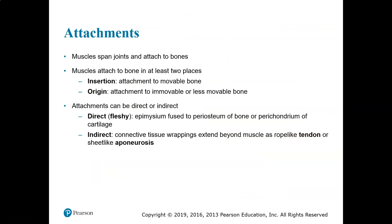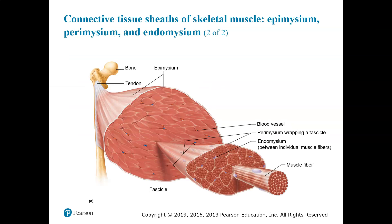Individual muscles attach to bones in at least two places. The insertion is the attachment to the movable bone — the part that moves when the muscle contracts. The origin is the attachment to the bone that doesn't move. Attachments can be direct, where the epimysium is fused to the periosteum of the bone, or indirect, where the epimysium is fused into a tendon (rope-like) or a sheet-like aponeurosis.